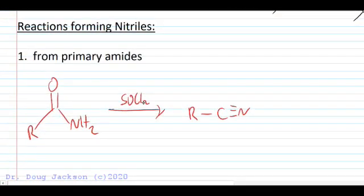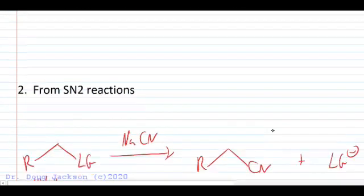Reactions forming nitriles. We're going to have a limited scope of reactions for this less reactive functional group, but we do have a reaction of an amide with thionyl chloride. The amides video takes care of that mechanism. We get a nice nitrile with the carbonyl carbon becoming the nitrile carbon in the product.